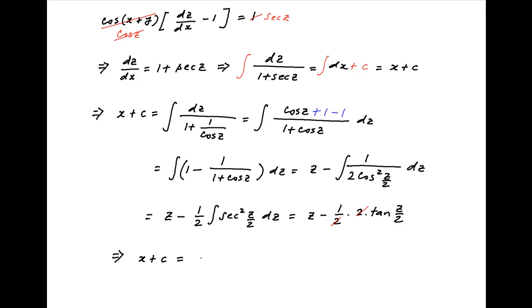This implies that x plus c equals z minus tan z upon 2. And replacing z with x plus y, we get x plus c equals x plus y minus tan of x plus y upon 2.